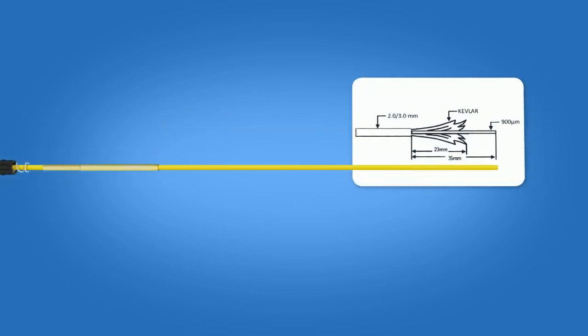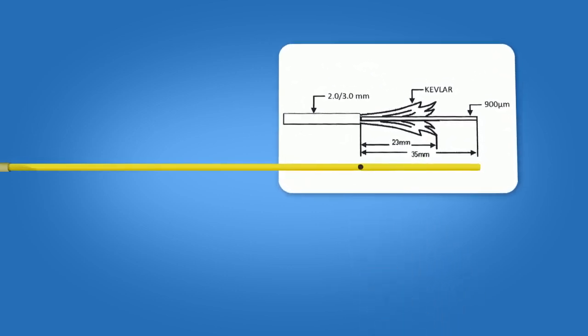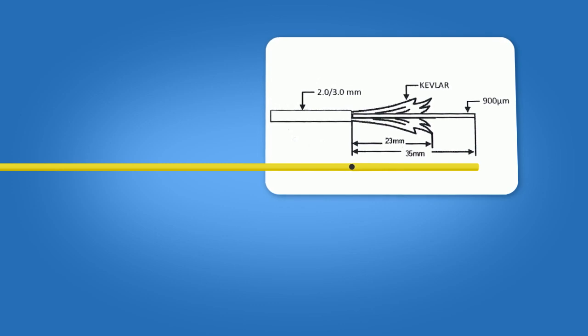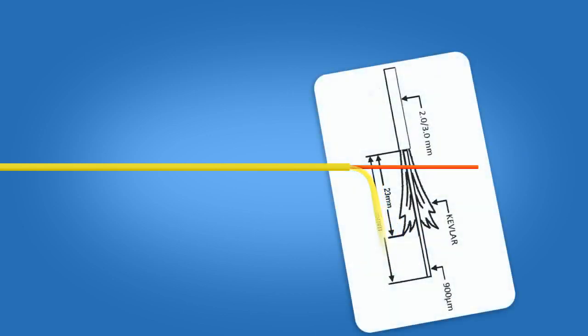Using the template on the front of the connector packaging, mark the cable at 35 millimeters from the end of the cable. Strip 35 millimeters of three millimeter jacket from the cable, exposing the Kevlar and 900 micron fiber. Cut the Kevlar to a length of precisely 23 millimeters.